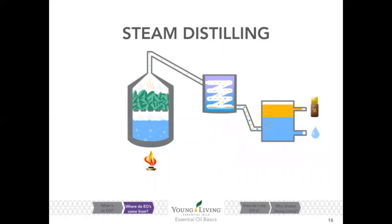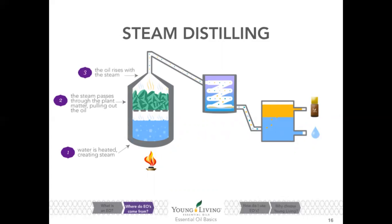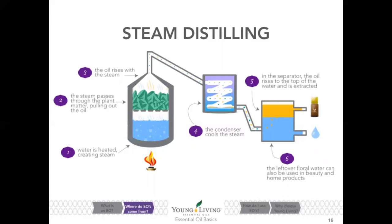These charts are a great way to look at the steam distillation process. Water is heated, creating steam. The steam passes through the plant material, pulling out the oil. The oil rises with the steam. The condenser cools the steam. In the separator, the oil rises to the top of the water and is extracted. The leftover floral water can also be used in beauty and home products.